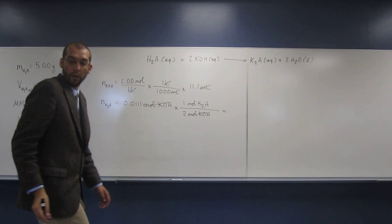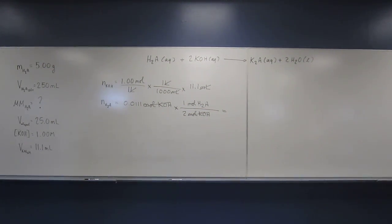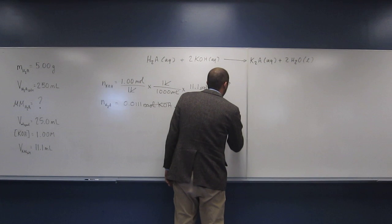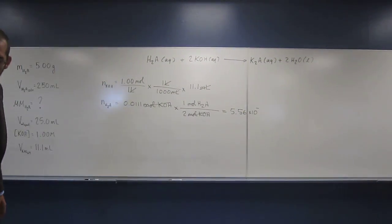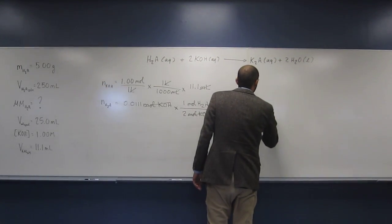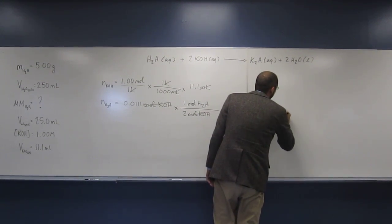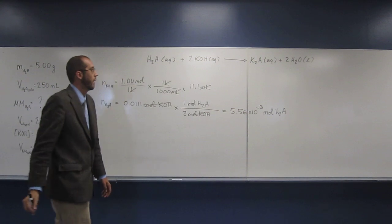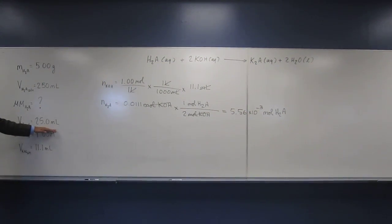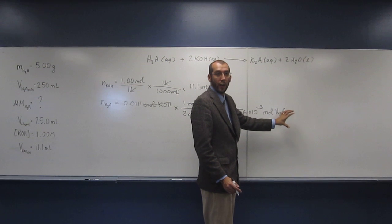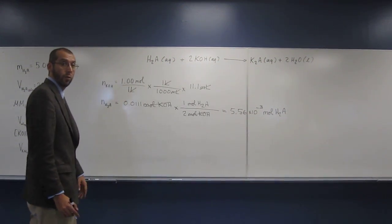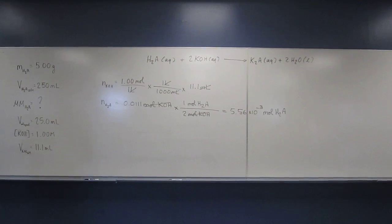And then, so that's going to be 5.56 times 10 to the negative 3 moles of H2A. So we could figure out what's the concentration of that right now, the concentration of that solution. But we're going to eventually need to figure out what the concentration of the actual solution is.